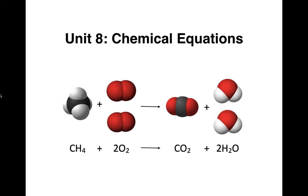So here we're going to start a new unit. This is Unit 8: Chemical Equations. This is just our title slide, so you can kind of see where we're headed this unit. In this unit we're going to be able to use our chemical formulas — we need to remember how to do that — and combine those to write balanced chemical equations to represent a chemical change that occurs.